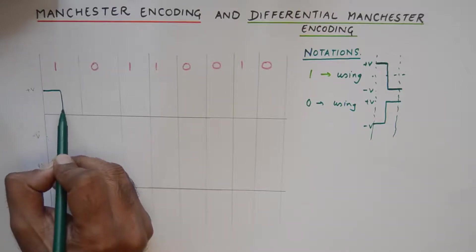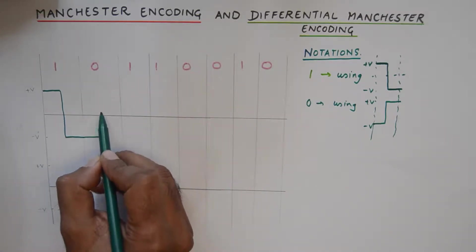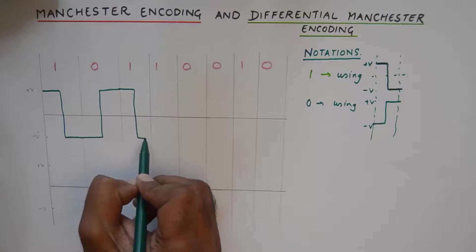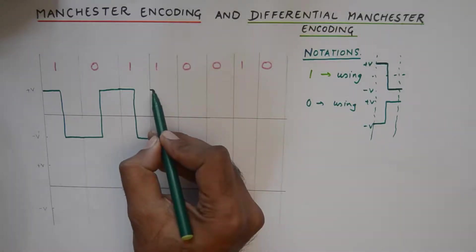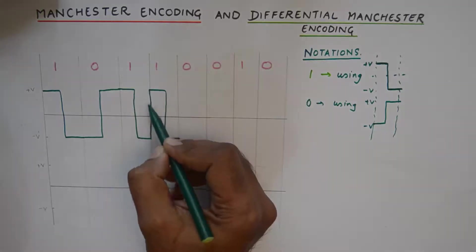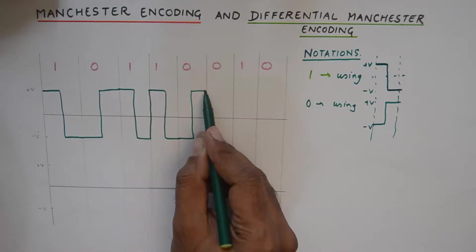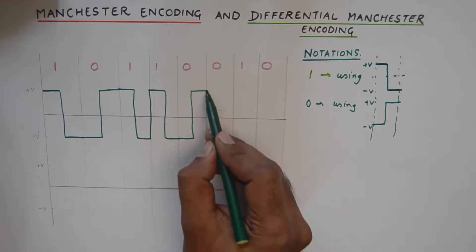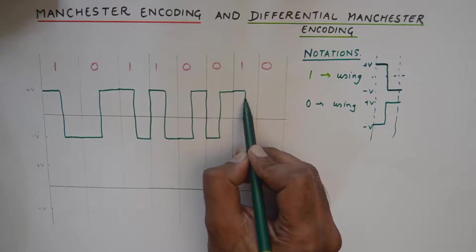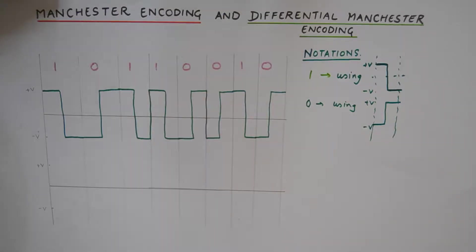So if one is represented like this and of course a zero is represented like this. Again if one starts from the positive value, ends at the negative value, and one will start at the positive value, will end in the negative value. Zero will start from negative, will stay in the positive territory for the half bit period. One starts from the positive zone, ends in the negative zone. Zero starts in the negative zone and ends in the positive zone.